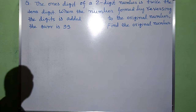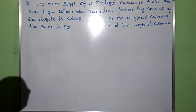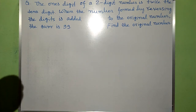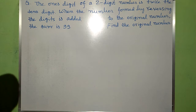The 1's digit of a 2-digit number is twice the 10's digit. When the number formed by reversing the digits is added to the original number, the sum is 99. Find the original number.